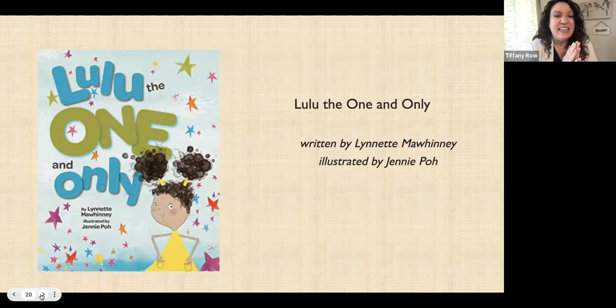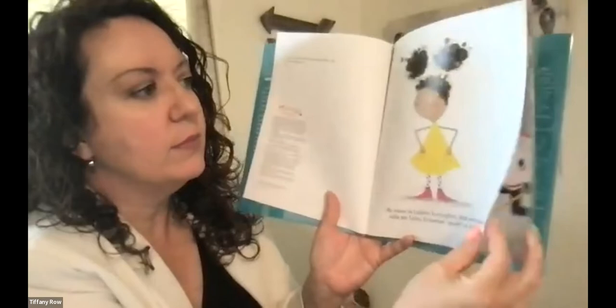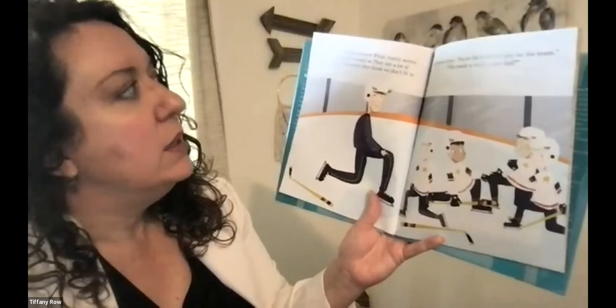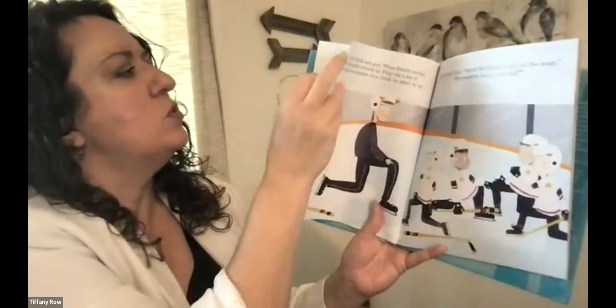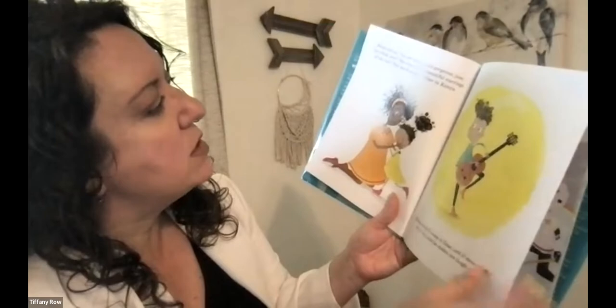The next book is called 'Lulu, the One and Only,' by Lynette Mawinney and illustrated by Jenny Poe. This one is about a multiracial family. My name is Lulu Etoile Lovington, but everyone calls me Lulu — it means pearl in Arabic. Being in a part black and part white family seems to confuse people around us. They say a lot of mean things to us because they think we don't fit in. Kids tease Zane: 'You're the blackest guy on the team — the coach is really your dad?' Mama tells me I am unique and gorgeous, just like a black pearl. She wears beautiful earrings all the time — they're from her mother in Kenya.